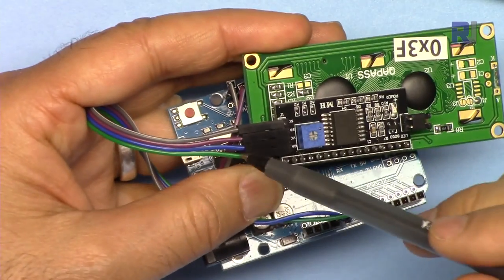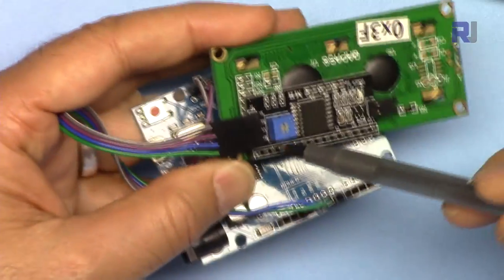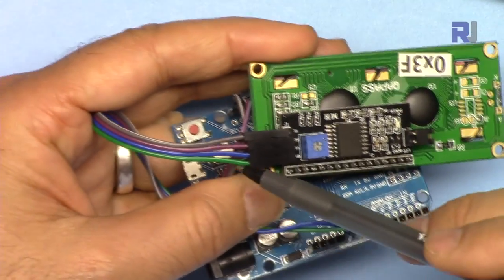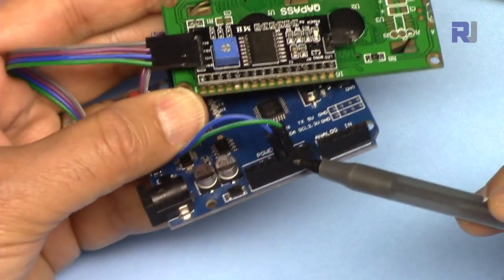VCC using blue line have been connected to 5 volts and ground or GND have been connected using green to the ground of Arduino.